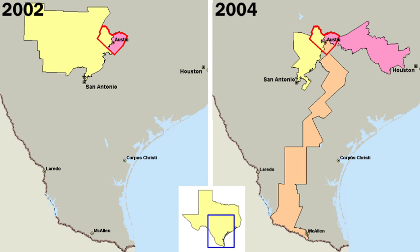Like the federal government, state governments have three branches — executive, legislative, and judicial. The chief executive of a state is its popularly elected governor, who typically holds office for a four-year term although in some states the term is two years. Except for Nebraska, which has a unicameral legislature, all states have a bicameral legislature, with the upper house usually called the Senate and the lower house called the House of Representatives, the House of Delegates, Assembly or something similar.